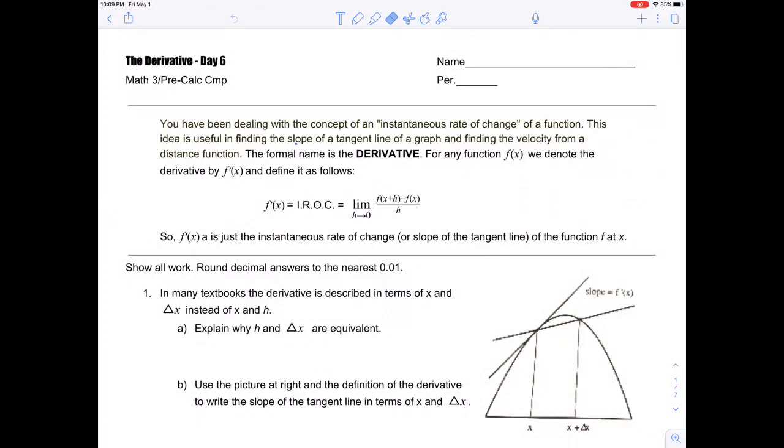Today we're looking at the derivative. We're at day six, and we've actually been dealing with derivatives ever since we've been talking about instantaneous rates of change. Instantaneous rate of change is the useful way to find the slope of a tangent line to a graph or the velocity of a distance function. Now we're looking at the formal name used for that in calculus, which is the derivative.